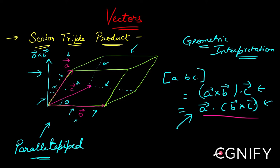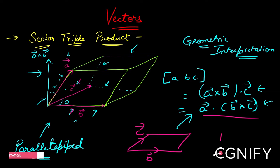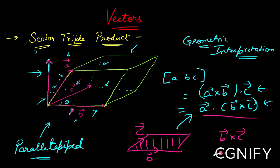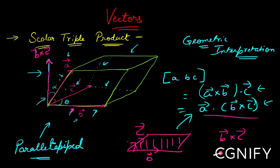If b and c are the edges at the bottom, the base is a parallelogram with b and c as edges. If I do b cross c, I get the area vector of this parallelogram — we have already seen that in cross product. This b cross c vector is perpendicular to the plane containing b and c, and it points upwards. This is the b cross c area vector.